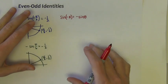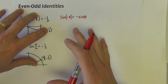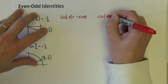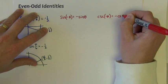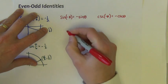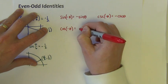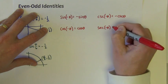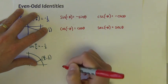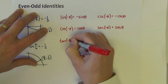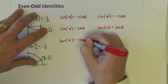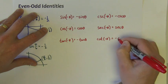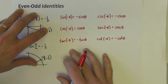Likewise, we could prove these other five. In the interest of time I will not prove them, but leave it as an exercise for yourself. Cosecant of negative theta equals negative cosecant theta. Cosine of negative theta equals cosine theta. Secant of negative theta equals secant theta. Tangent of negative theta equals negative tangent theta. Cotangent of negative theta equals negative cotangent theta. So there are six of them in all.